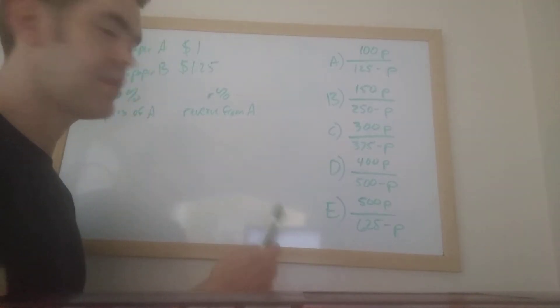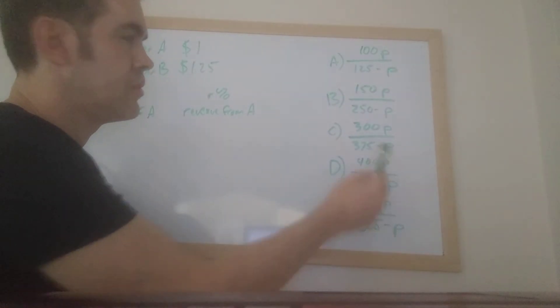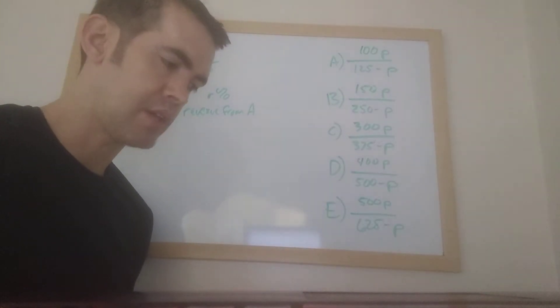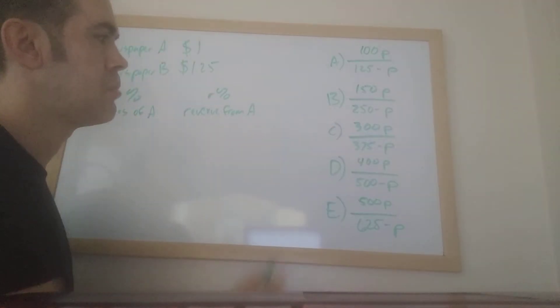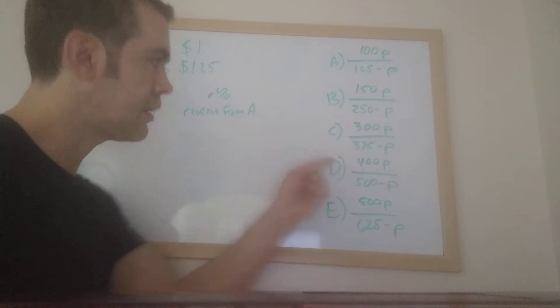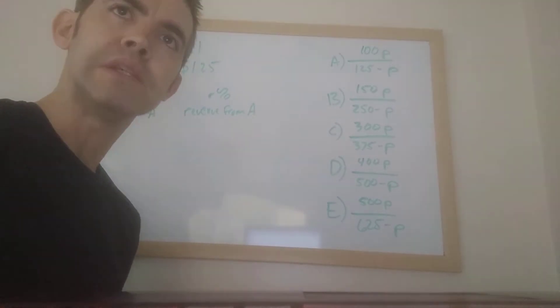Okay, so basically in this problem, the first thing you should notice is that each of the answer choices has variables in them. So whenever that's the case, you pretty much have two different routes to solve the problem. One is you could just do the algebra, or two, you can pick numbers for these variables, figure out what the solution is, and then plug in what you've picked in and see whether that matches. So if the algebra looks easy to you, you should just do the algebra.